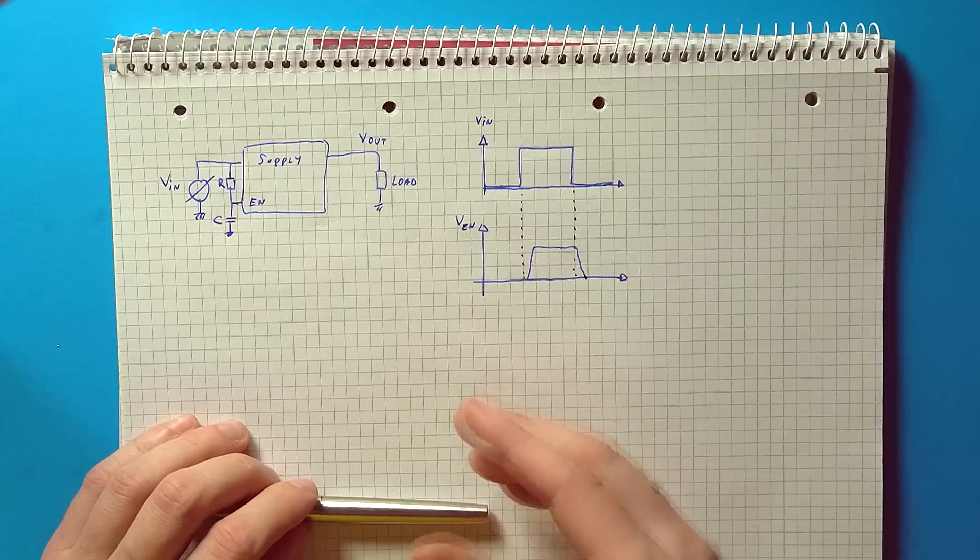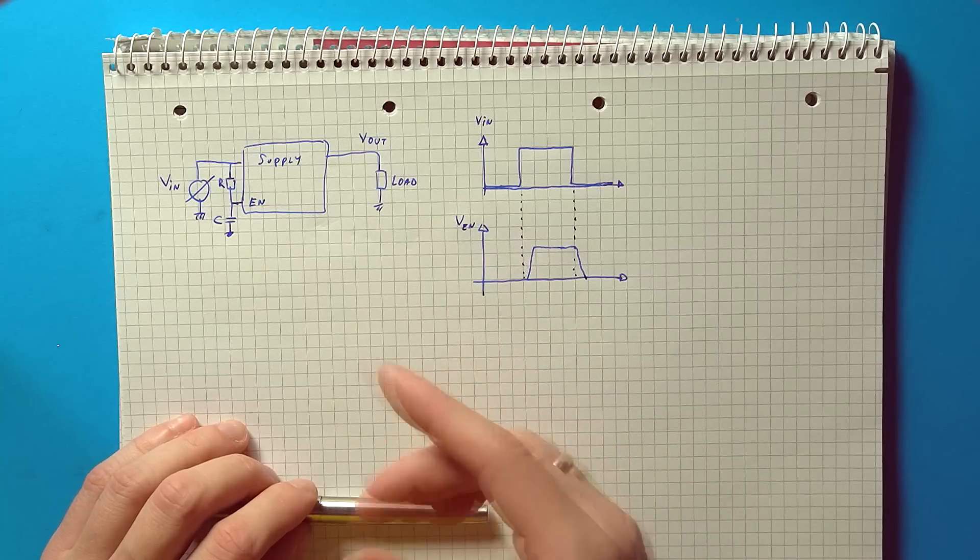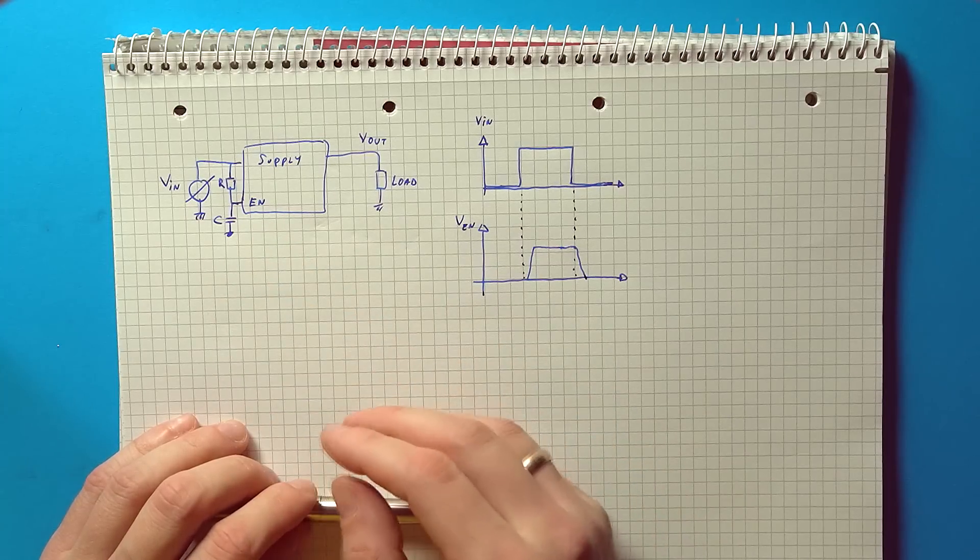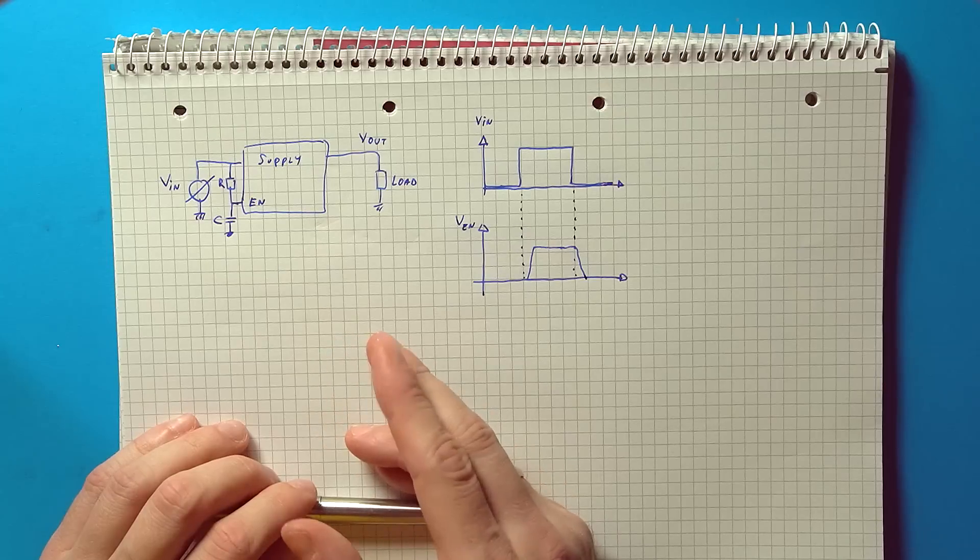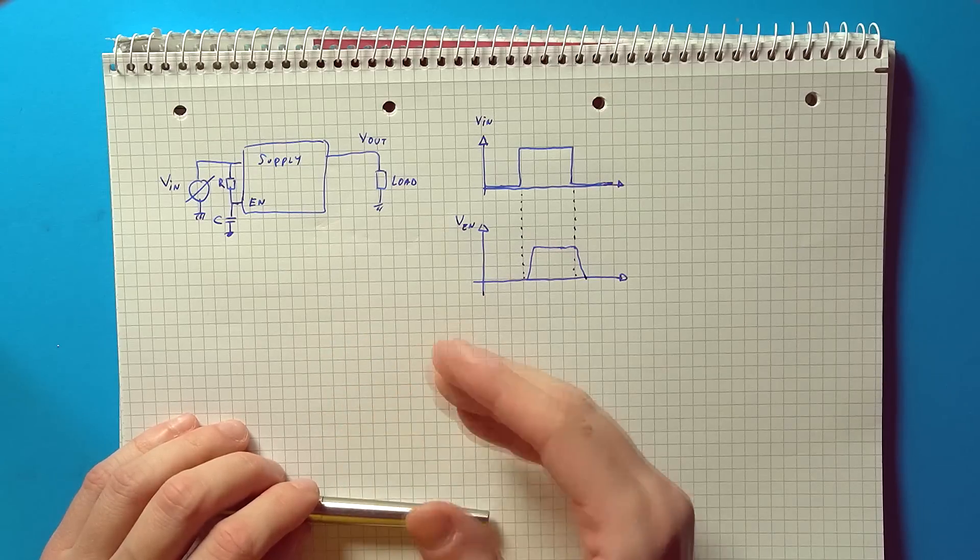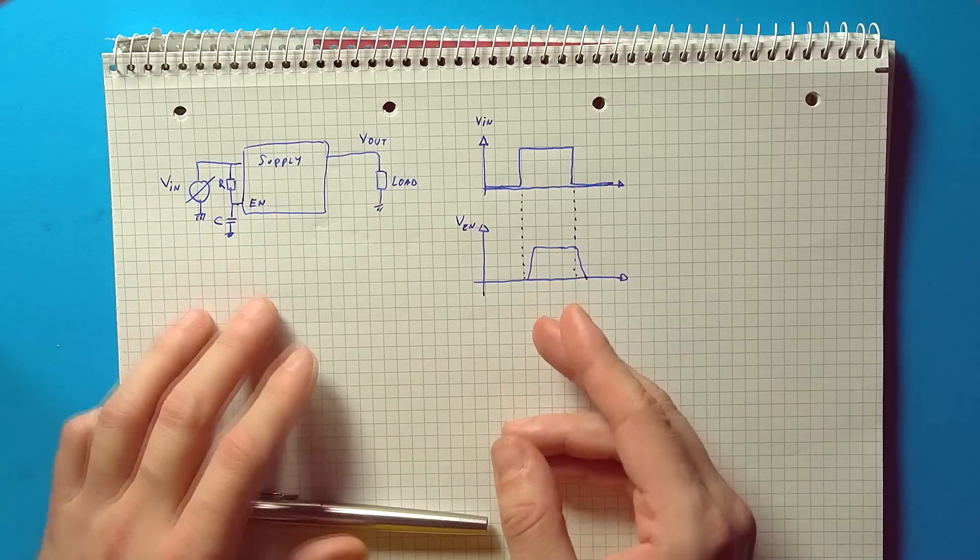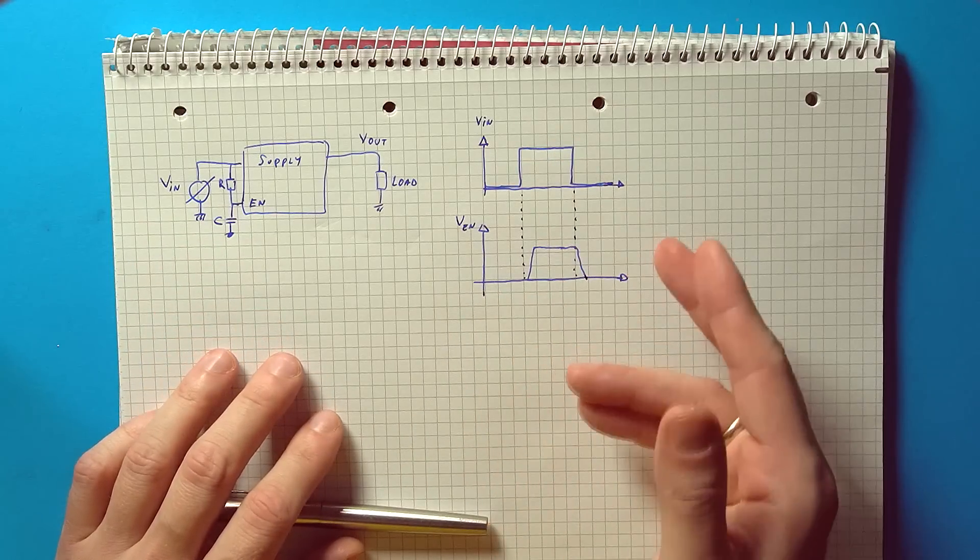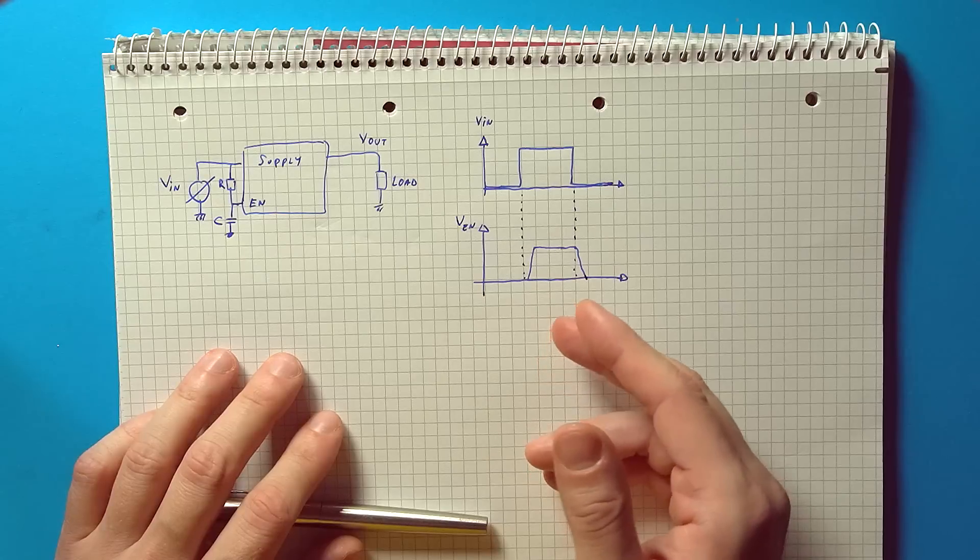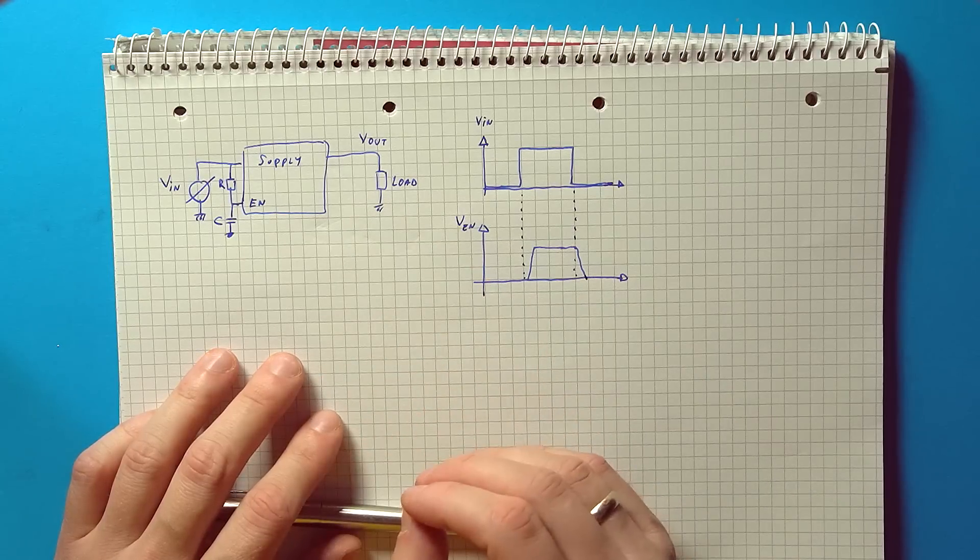One element that can help if this is an issue is the existence of an enable pin. So it should be possible to turn on the supply only after the input voltage reaches its final value by including an RC circuit to cause a delay until the input voltage stabilized. By implementing this there should be no more output overshoot.